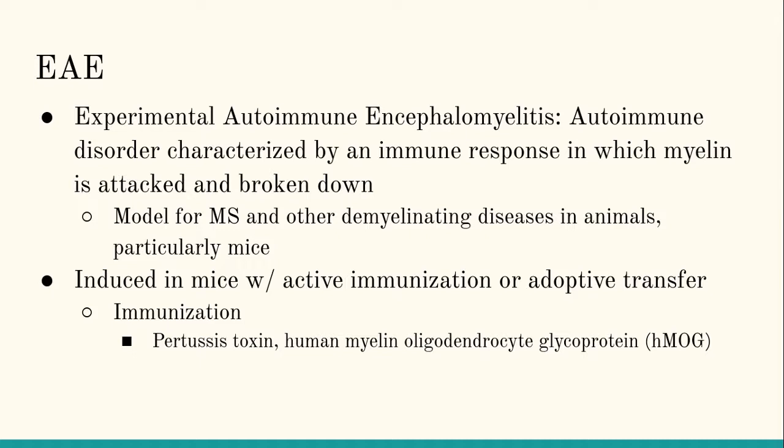In mice, EAE can be induced two ways: through active immunization or adoptive transfer. I looked at the active immunization, which involves the introduction of a toxin to the mouse's system — like pertussis toxin, whooping cough — followed by a protein you want the immune system to attack. Human myelin oligodendrocyte glycoprotein, HMOG, was used, and that allows the mouse to recognize myelin as an invader and attack its own myelin as well, causing disease.